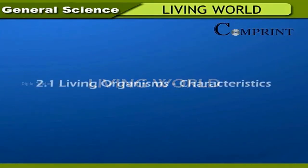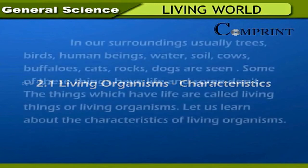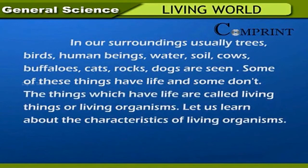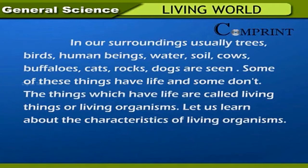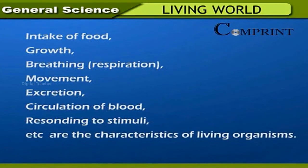In our surroundings we see trees, birds, human beings, water, soil, cows, buffalos, cats, rocks, and dogs. Some of these things have life and some don't. The things which have life are called living things or living organisms. The characteristics of living organisms include intake of food, growth, breathing, movement, excretion, circulation of blood, and responding to stimuli.